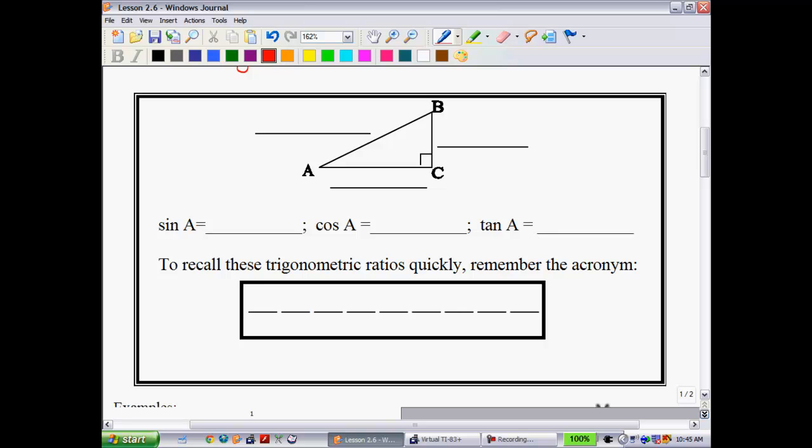So just to review our SOHCAHTOA again, when we're dealing with sine, we have, of course, the opposite over the hypotenuse. Cosine is the CA, adjacent over hypotenuse. And tangent is the OA, or the TOA, with the opposite over adjacent. So we have SOHCAHTOA. And if A is our reference angle, which it is here, we would have this being our opposite side. This is our adjacent. And your hypotenuse.